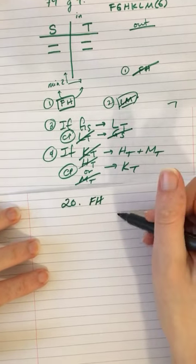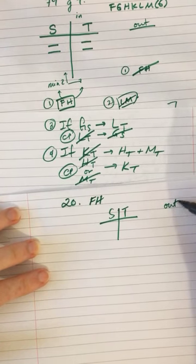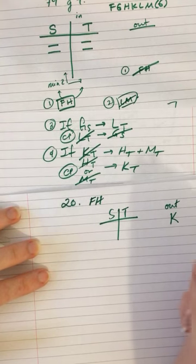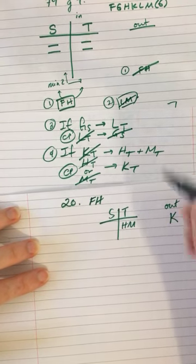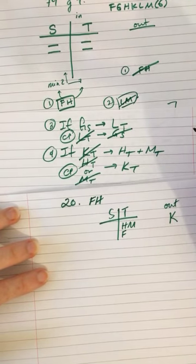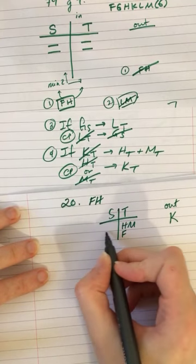All right, so S, T, out. So if K is out, then H and M are both in T. H has to be with F, so F is in T as well. We have three in T.